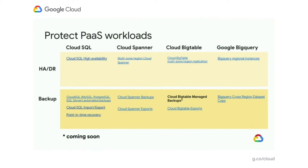GCP PaaS databases and analytics services also pack in a rich set of replication and backup capabilities. Managed databases such as Cloud Spanner and Cloud Bigtable offer modes for cross-zone and cross-region replication. Cloud SQL HA instances and Google BigQuery regional instances provide high availability against zone failures. For data backups, PaaS databases on GCP offer managed backups as well as the ability to export data in industry-standard formats. Cloud SQL also enables granular recovery from user errors or application corruption via point-in-time recovery. Let's look at how one of our customers is using GCP's business continuity primitives as building blocks in their data protection strategy.